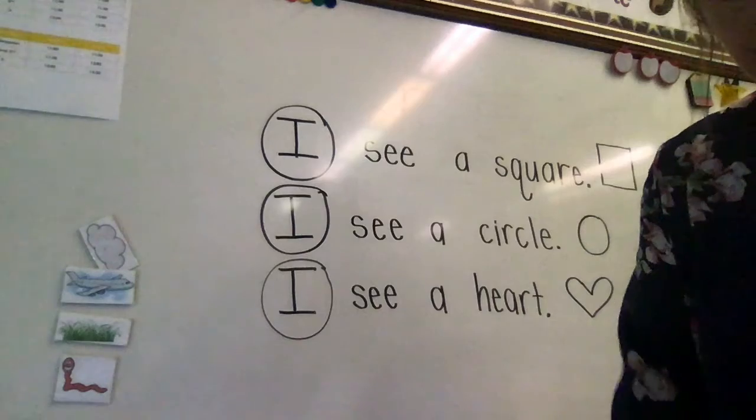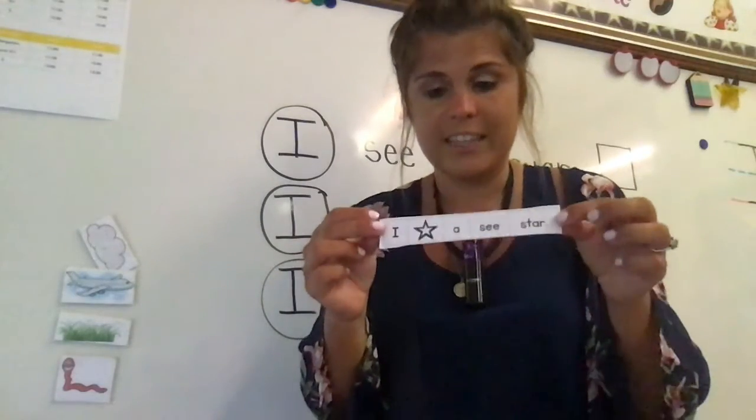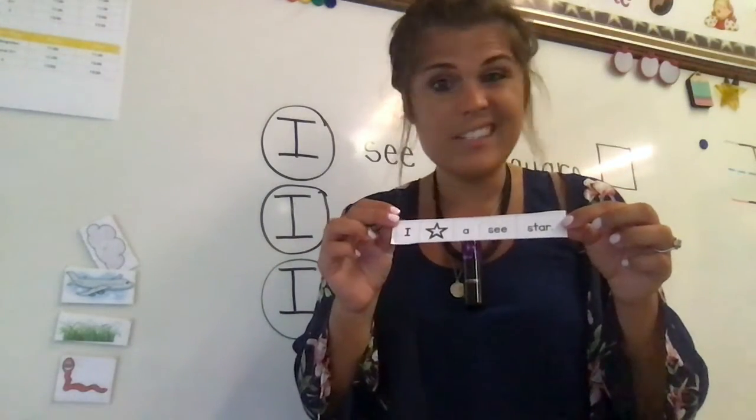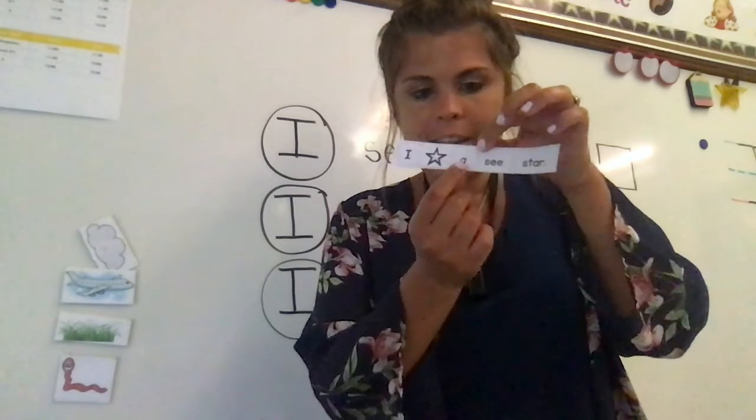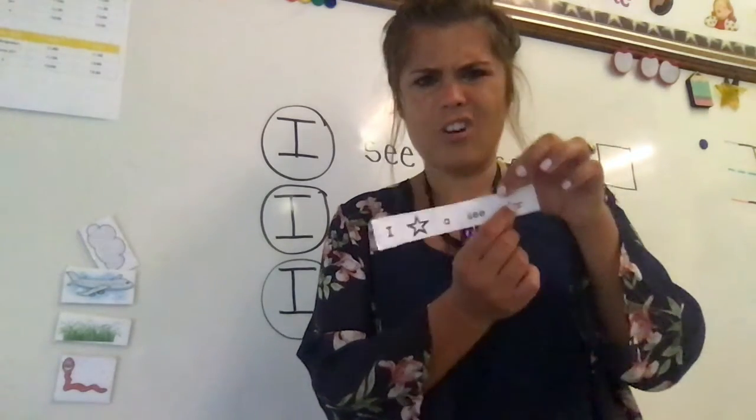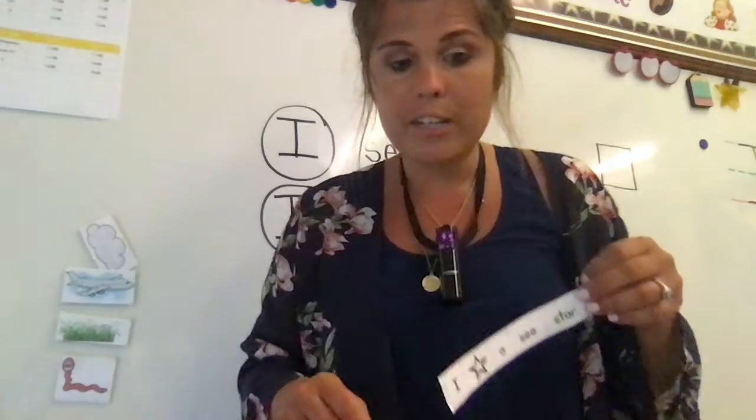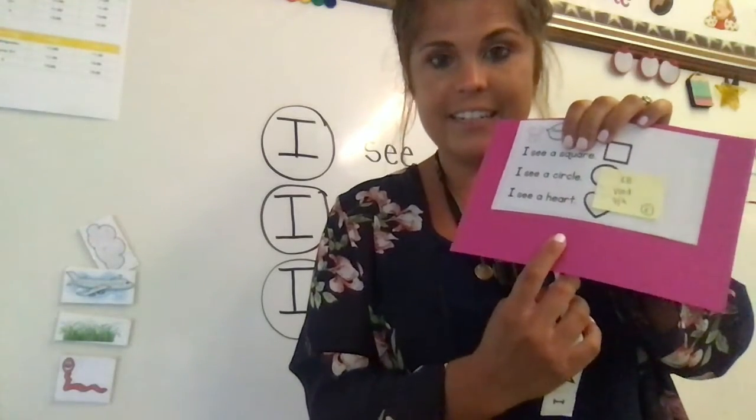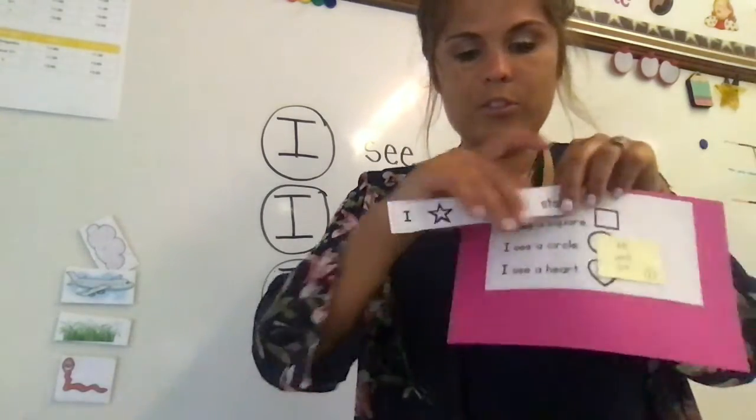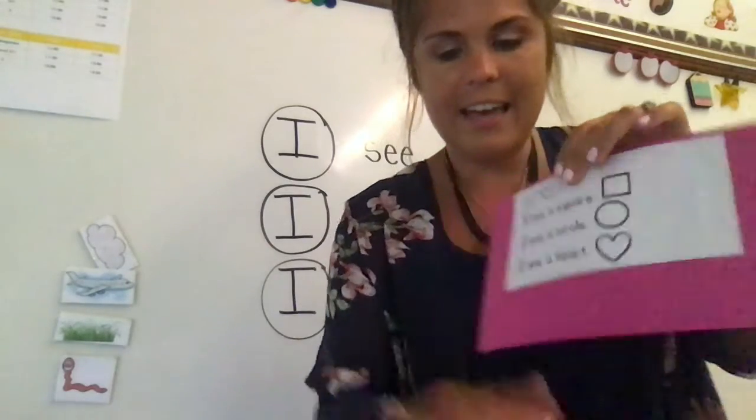Awesome job. So we're practicing reading sight word I. Alright, here is your last step. You guys have a strip of paper that looks like this. Right now, my sentence is not in order. Right now, it says I star A C star. That doesn't make sense. So you guys have to cut out each word and you have to put it in order on the bottom of your paper so that it says I C A star. So you're cutting out the bottom and gluing the words in order so that it says I C A star in the correct order at the bottom.